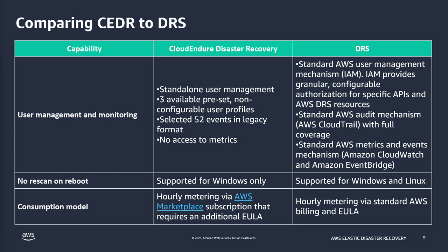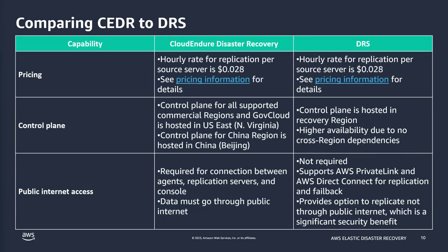The consumption model is the same — hourly metering via AWS standard billing — built directly into the billing system so you don't need a marketplace subscription. Pricing is the same at $0.028 per hour per server. The control plane, previously supported only in US East, is now supported in all recovery regions available with Elastic Disaster Recovery, providing higher availability due to no cross-regional dependencies. Public internet access is no longer required; we can utilize AWS Private Link and Direct Connect for replication, which is a significant security benefit.